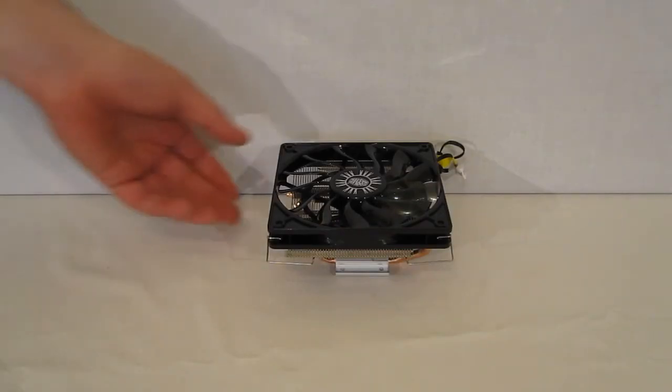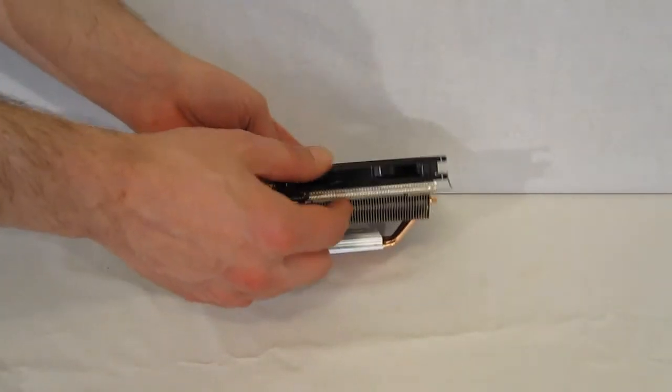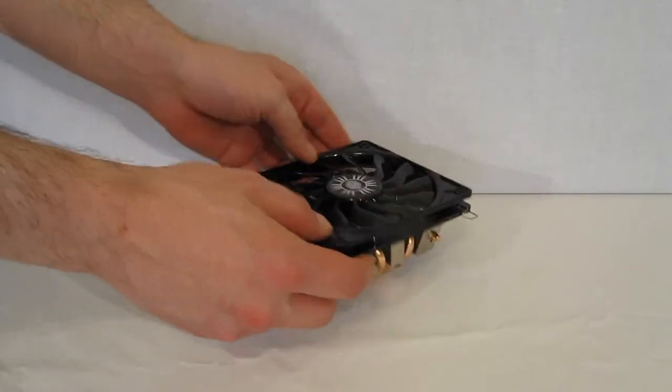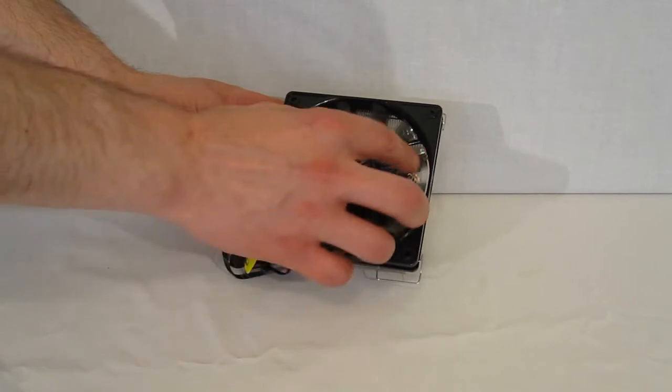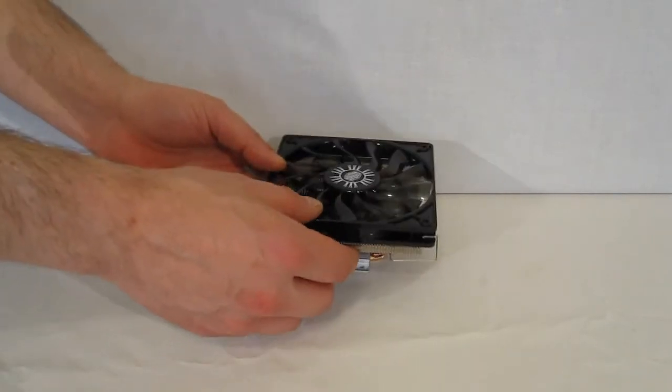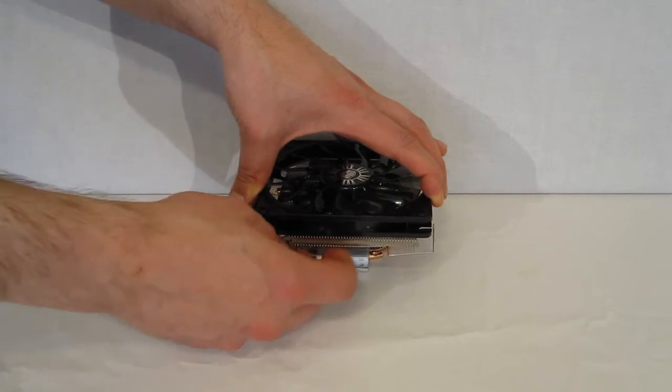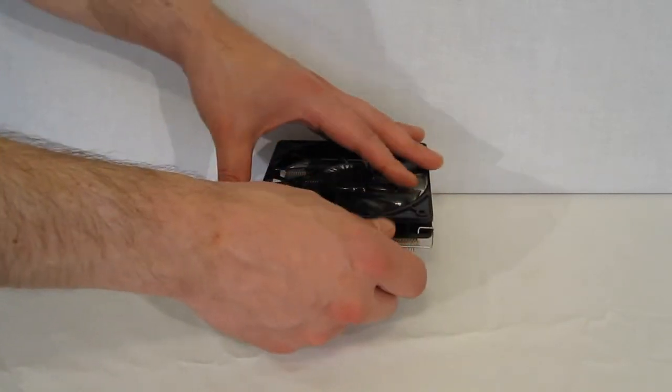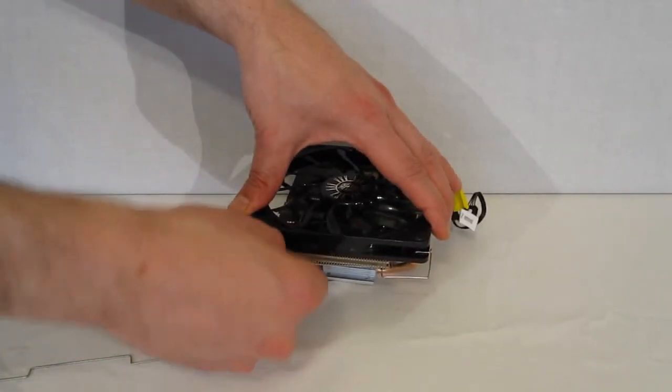Out of the box, the Gemini M4 is certainly a unique looking piece. Taking a look, you can see, very slim fan. Half thickness of standard fan. However, full 120 millimeters. And the blades themselves have a curvature, which is supposed to aid in keeping the noise down as well as keeping the air flow up.